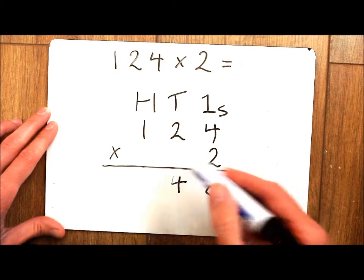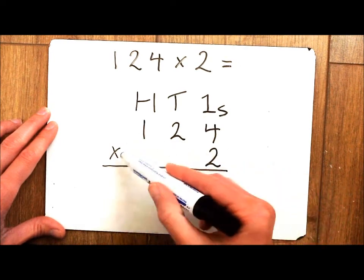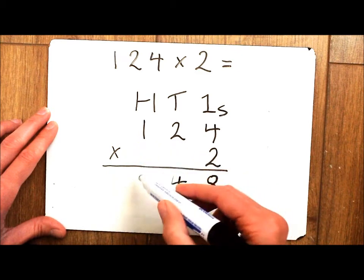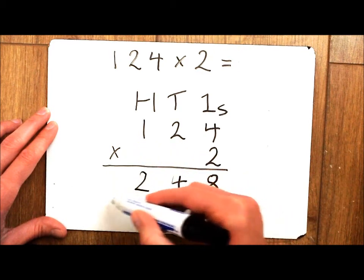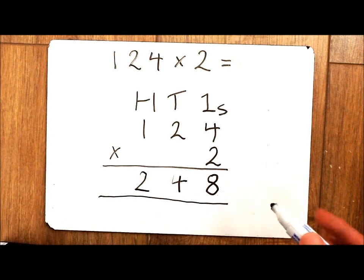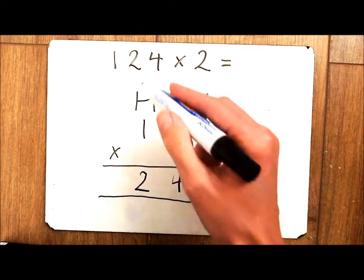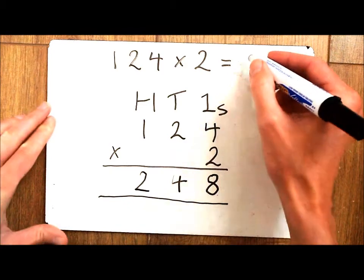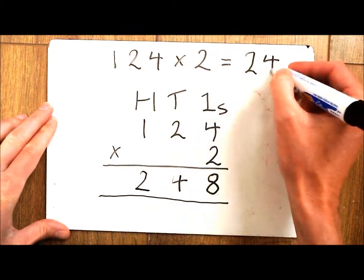Then I am going to multiply my 2 by my 1 or 2 times 100 which gives me 200. So using the compact short multiplication method, 124 times 2 is 248.